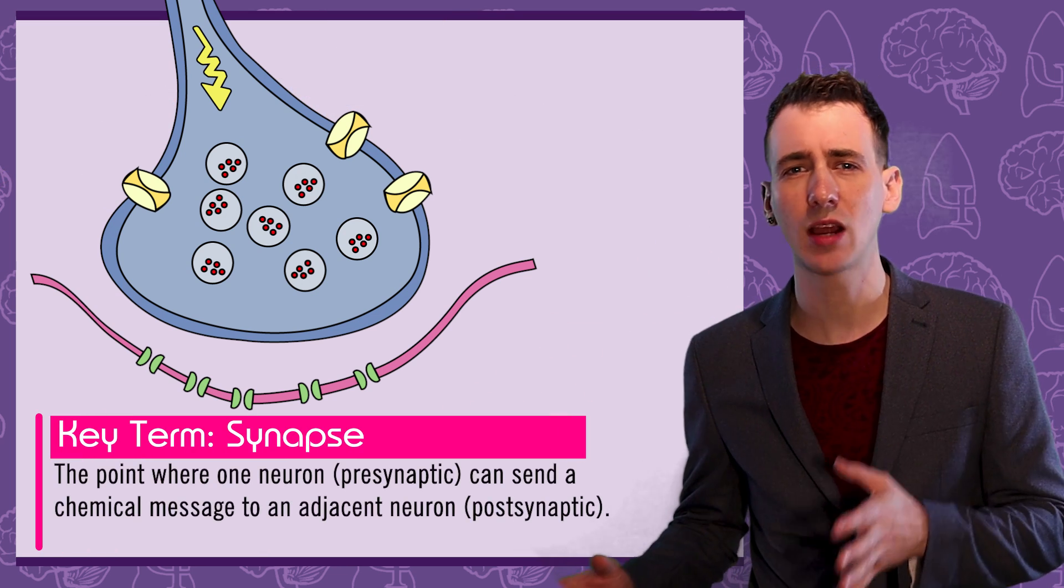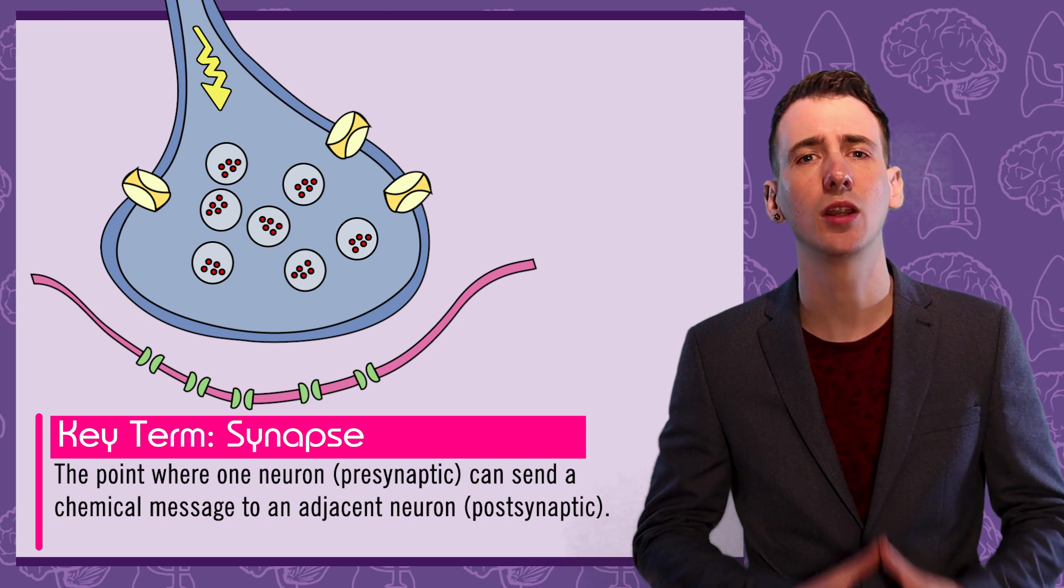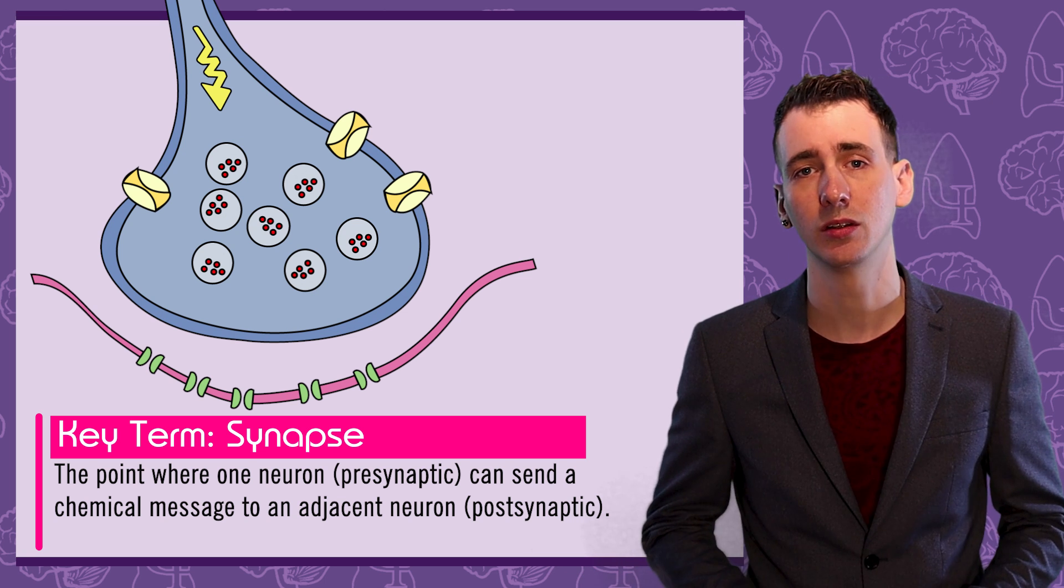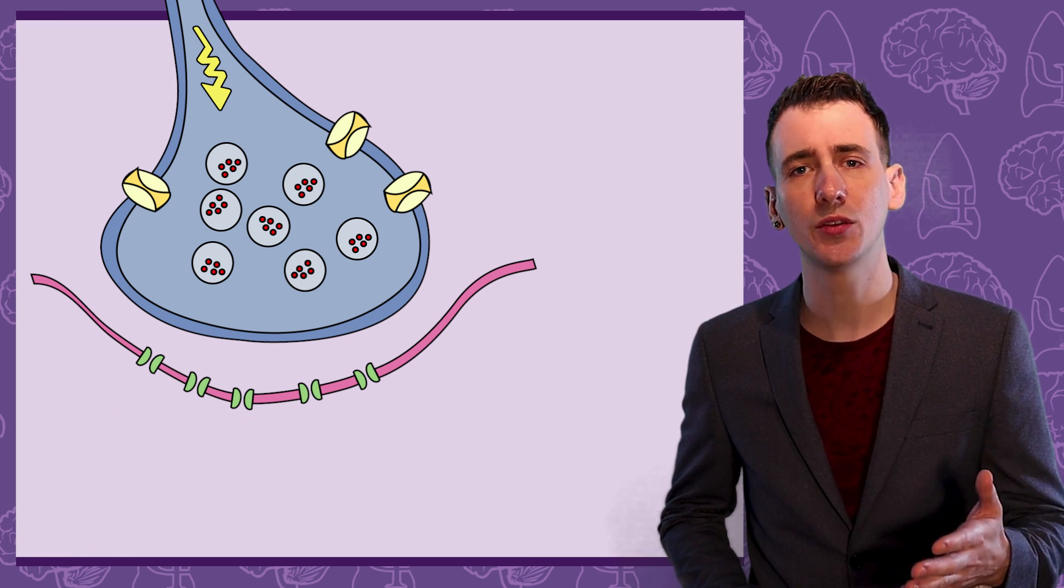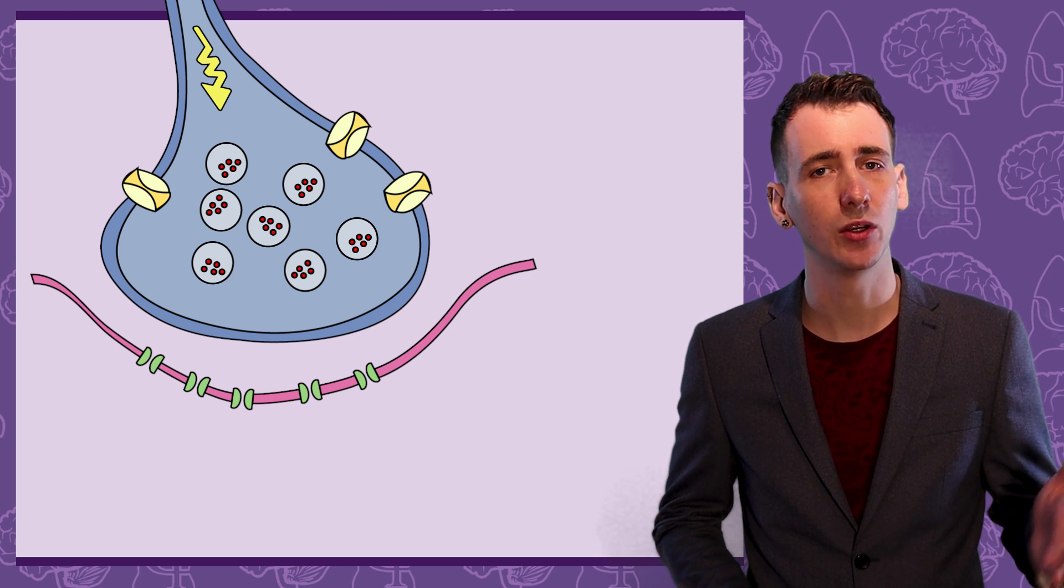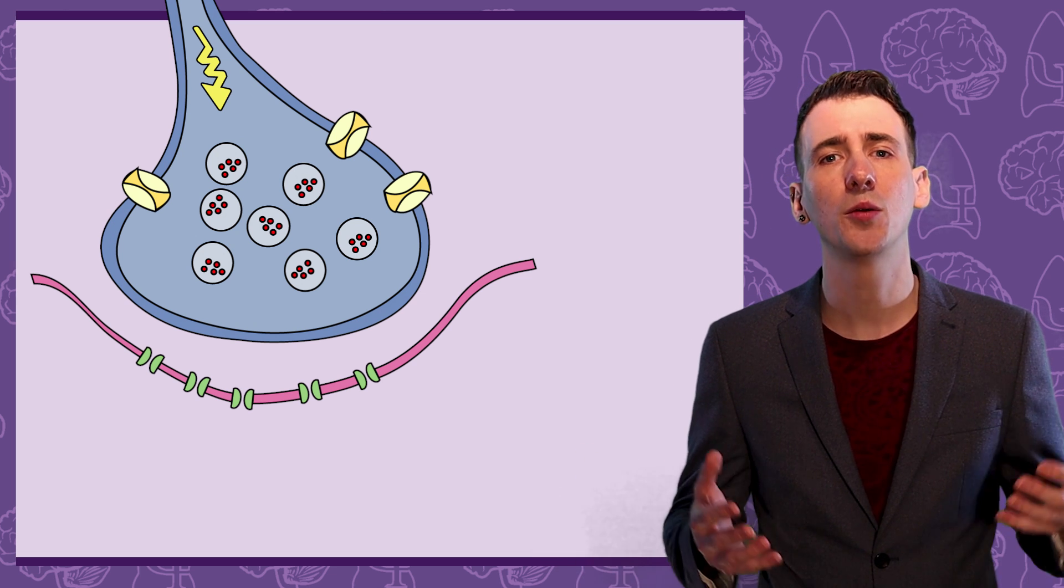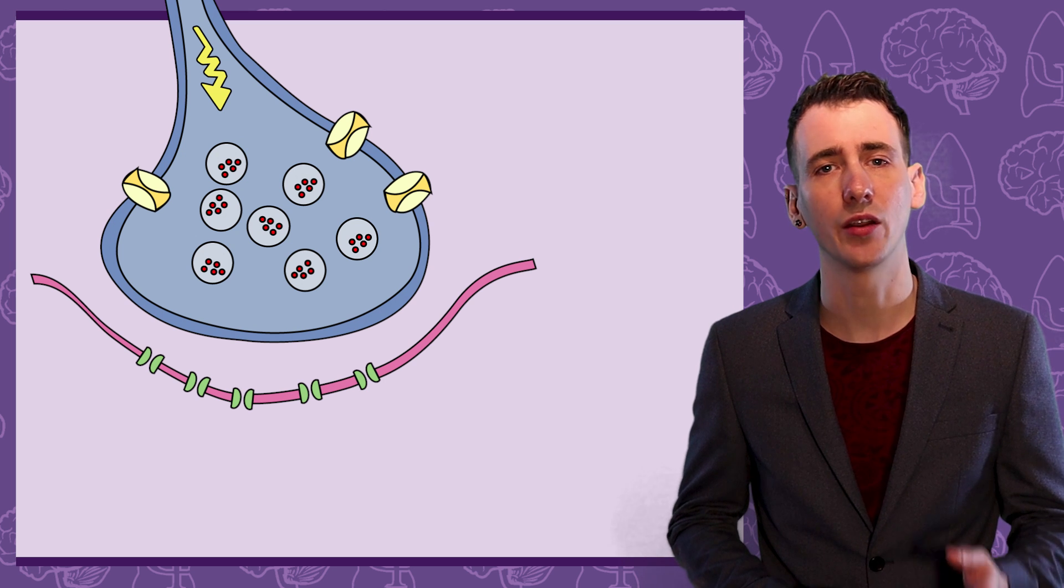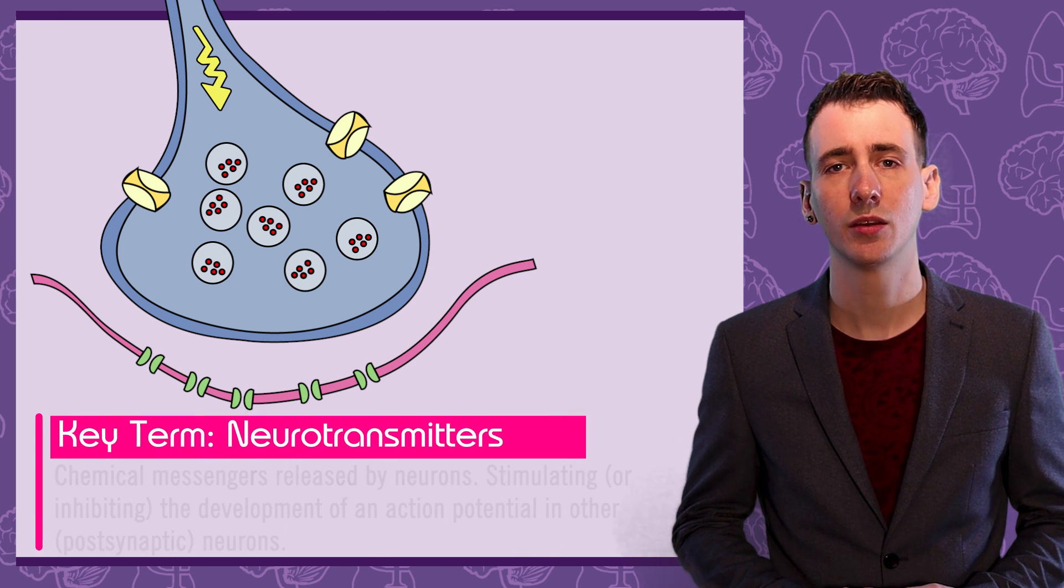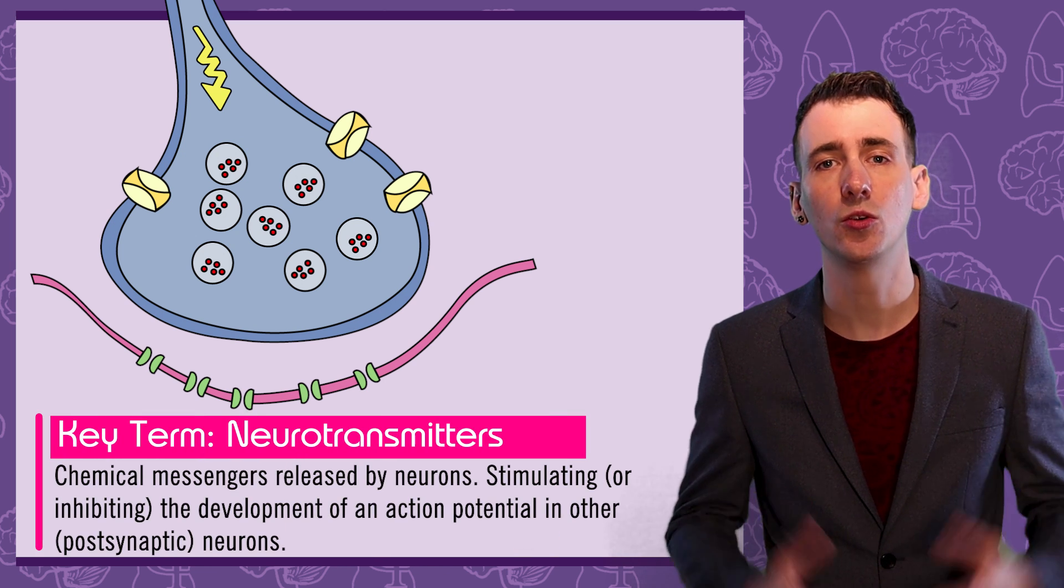In the previous video I spoke about how information travels through a neuron as an electrical impulse known as an action potential. Well here, the electrical impulses can't cross from the axon terminal to the adjacent dendrite, so it must pass information on as chemical messages. These chemicals are called neurotransmitters.